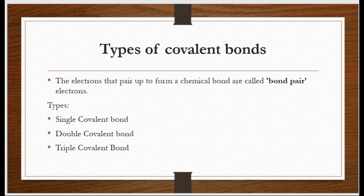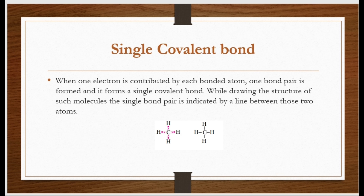Jitne electrons koi bhi atom share karta hai, usko base banate hue humne covalent bond ki teen types banaai hain. First is known as single covalent bond — matlab ek bond hai, to har bond banane wala atom apna ek electron share karega. Jab bond banane wala har atom apna ek electron share karta hai, to ek bond pair banta hai. Aise bond ko hum single covalent bond kahte hain, aur isko hum indicate karte hain do atoms ke darmiyan single line se — between two bonding atoms.